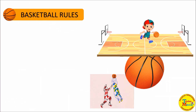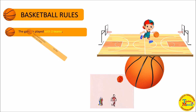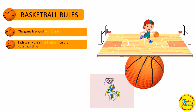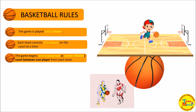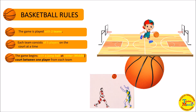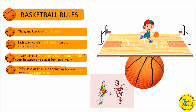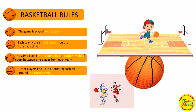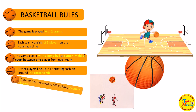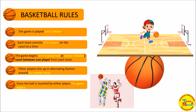Basketball rules. The game is played with two teams. Each team consists of five players on the court at a time. The game begins with a jump ball at center court between one player from each team. Other players line up in alternating fashion around the center circle. Once the ball is touched by either player, the game begins.